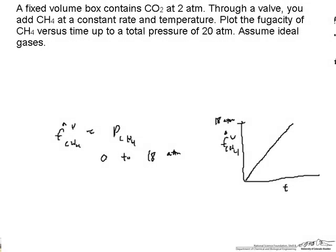Here we're adding methane to CO2 at a constant rate, and we want to plot the fugacity of methane, recognizing that methane is going to behave like an ideal gas, as is CO2. And so for an ideal gas, the fugacity of methane is just equal to the partial pressure of methane.